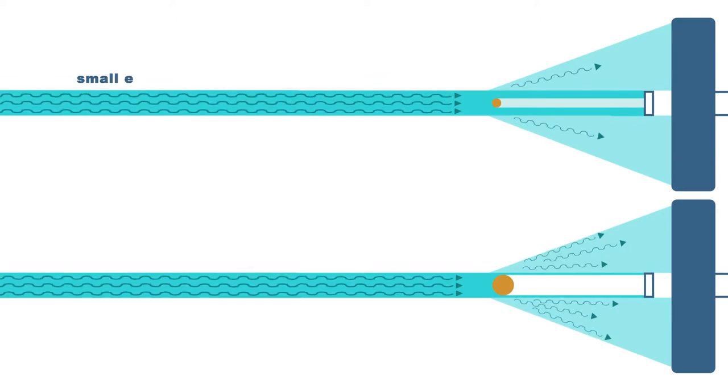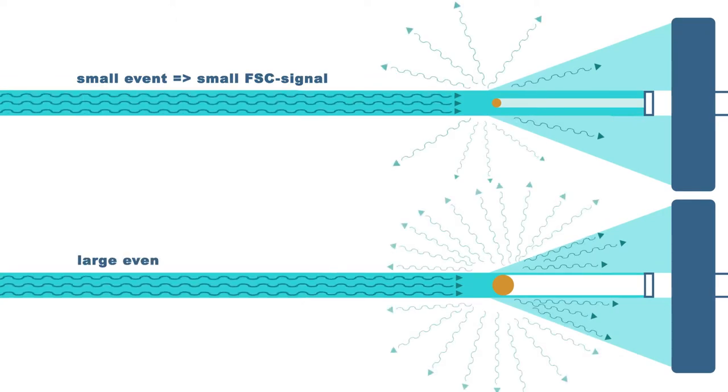The detector in the forward direction transforms the intensity of incoming light into an electrical signal. Appropriate detectors are linear over a wide dynamic range. A lower intensity of scattered light leads to a low voltage at detector output. A high intensity of scattered light leads to a high voltage of detector output.